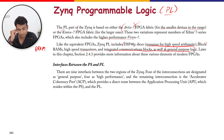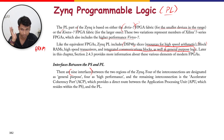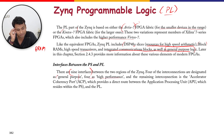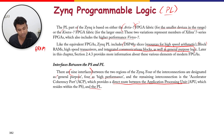There are nine interfaces between the PS and PL regions. Four interconnections are designated as general-purpose, four as high-performance, and the remaining one is the Accelerator Coherency Port (ACP), which provides a direct route between the APU and the PL.